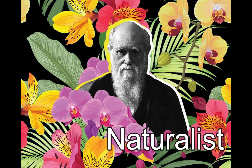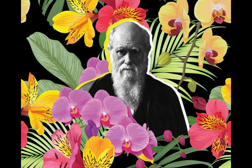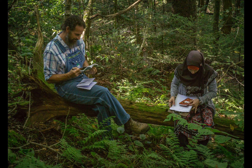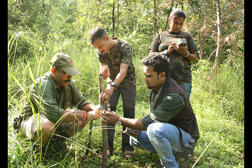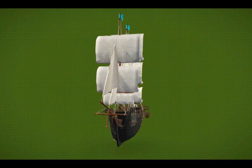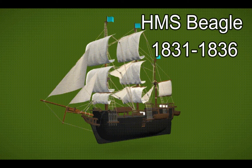Charles Darwin was a naturalist — somebody who studied nature in its natural habitat. As a naturalist, Darwin set sail on the HMS Beagle in the year 1831 to 1836.